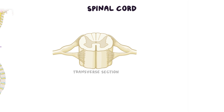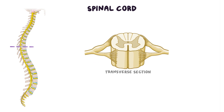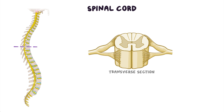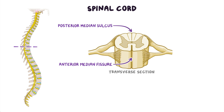If we look at a transverse section of the spinal cord, we can see the anterior median fissure that extends along the midline of the spinal cord anteriorly. Similarly, the posterior median sulcus extends along the midline of the spinal cord posteriorly.